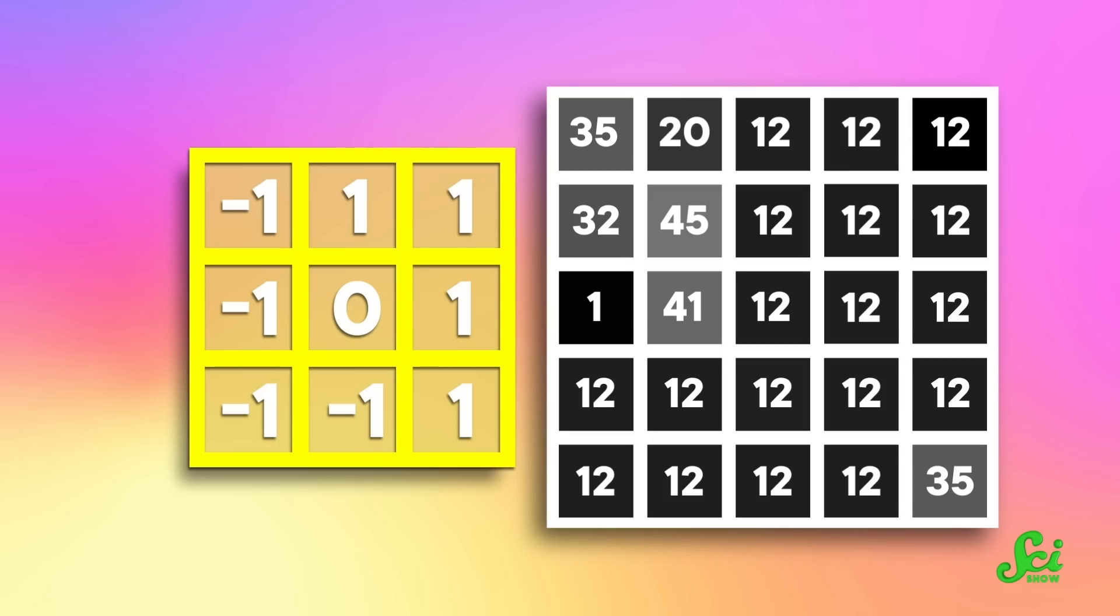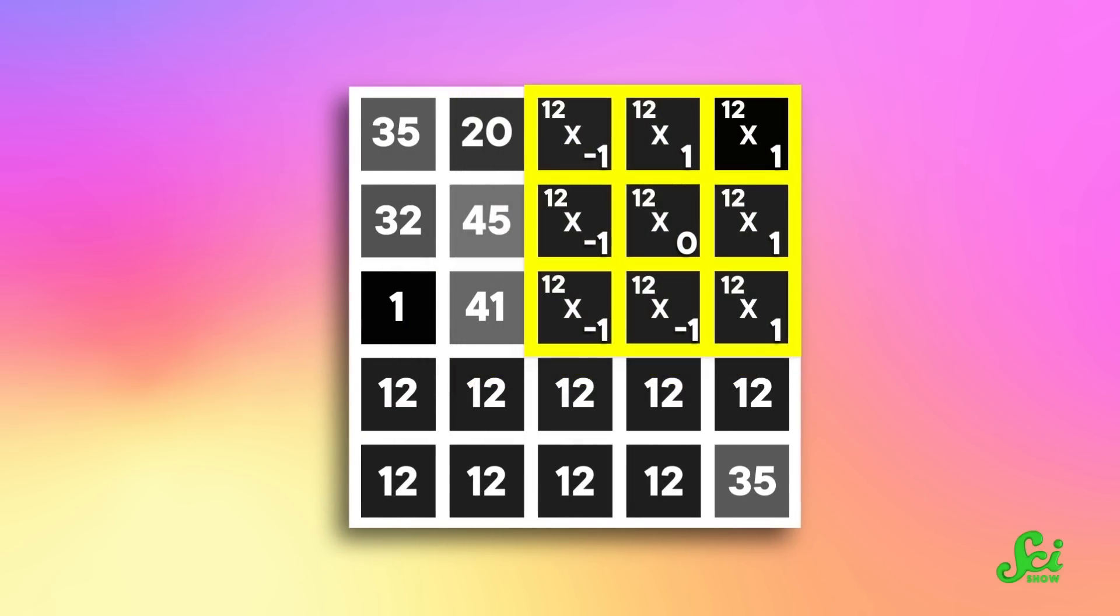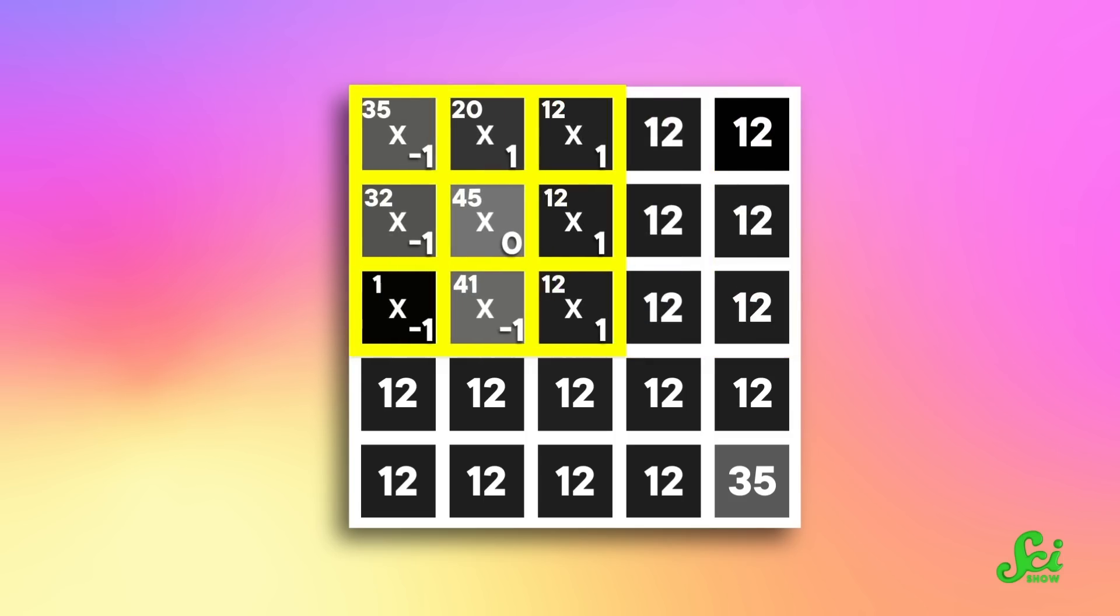That new number gets placed onto a duplicated version of the old image, over and over again until the whole thing has been analyzed. And changing the numbers that you put into that kernel will help you identify specific parts of an image. For instance, if you want to detect edges, you can use a kernel that has negative values on one side and positive values on the other side, like this one. If all the pixels in one area have the same value, when you add up all the products, the negatives and positives will cancel each other out, and the final result will be zero. But if one side is darker or lighter, the pixels will have different values, like this.